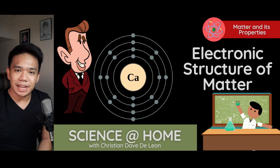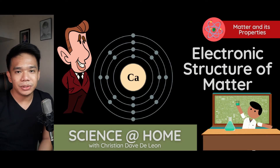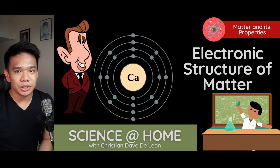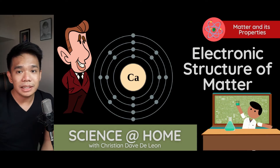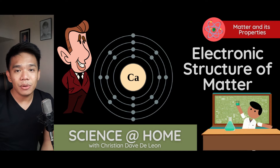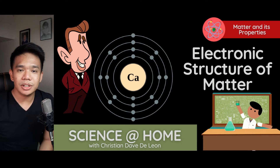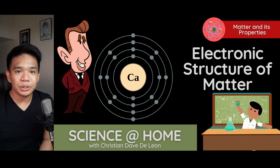Hi everyone, welcome back to Science at Home. For today, we're going to be exploring the electronic structure of matter. When we talk about the electronic structure of matter, this refers to how electrons are distributed among the atom. But before we proceed, let us look at some historical perspectives on how we came up to the electronic structure of matter.